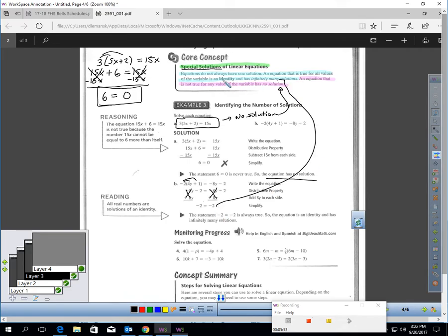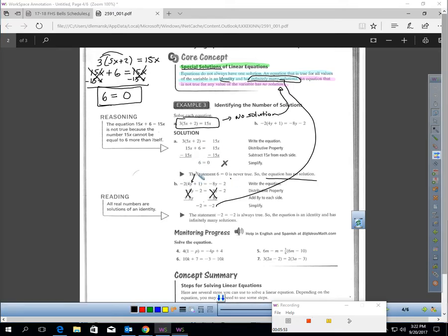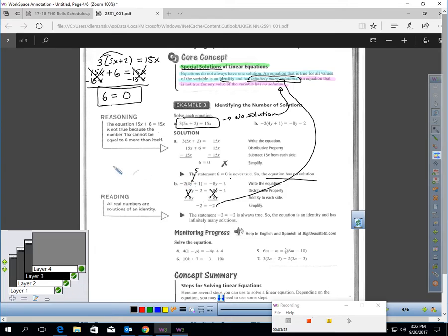This is the situation in blue. This problem is called identity. It has infinitely many solutions. It means I could plug in any number I want, and I'm going to get a true statement. I'll prove it to you. Let's pick 5. If I put 5 here, I get negative 2 times 21. That's negative 42.